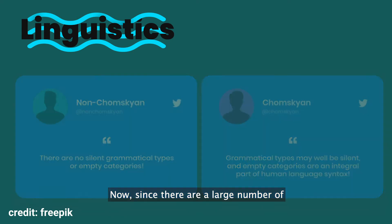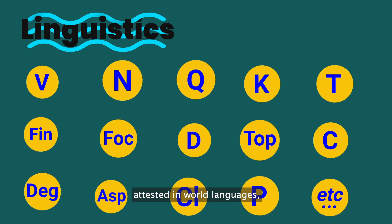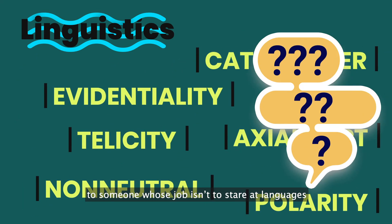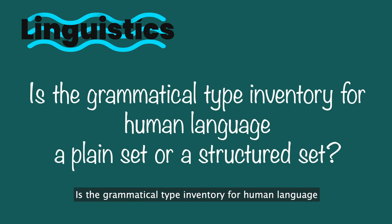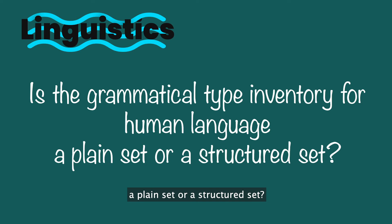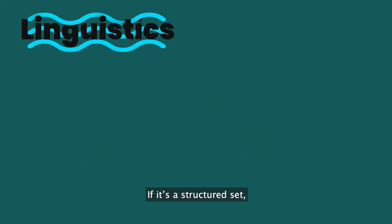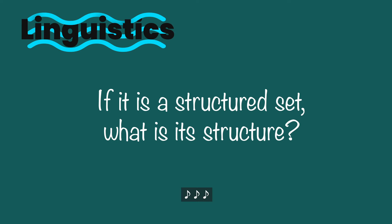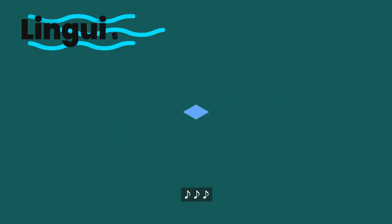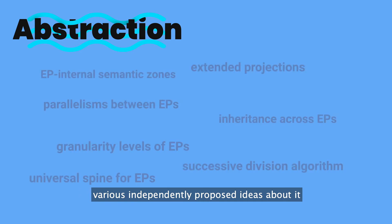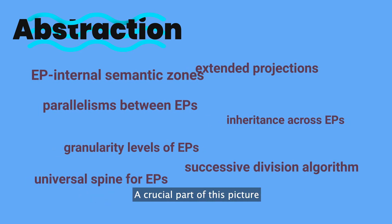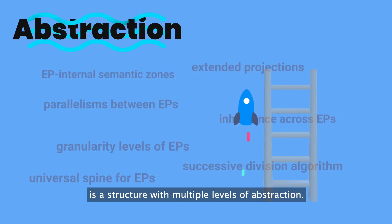Since there are a large number of subtle grammatical types and functions attested in world languages — many of which are totally bizarre to someone whose job isn't to stare at languages under the microscope every day — a legitimate question is: is the grammatical type inventory for human language a plain set or a structured set? If it's a structured set, what is its structure? Although no linguistic studies have been dedicated to the detailed structure of the grammatical type inventory, various independently proposed ideas about it present us with an approximate picture, and a crucial part of this picture is its structure with multiple levels of abstraction.